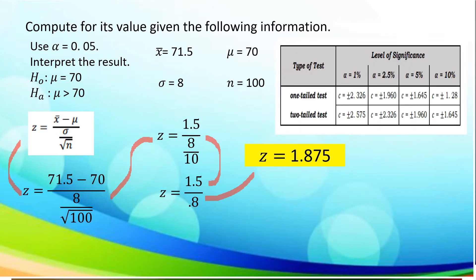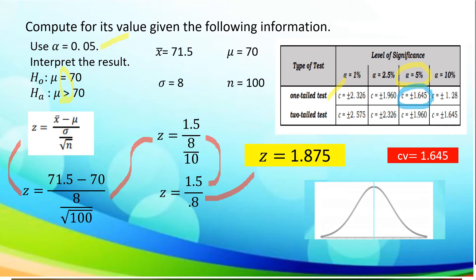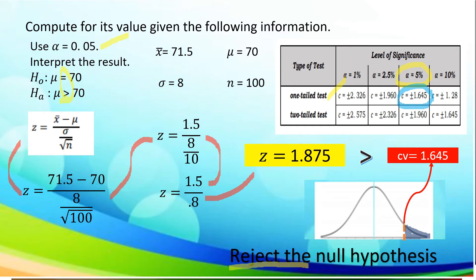Now let's use the z-table with the level of significance of 5%. Since the alternative hypothesis is mu greater than 70, this is a one-tailed test. Therefore, our critical value is positive 1.645, reflecting a right-tailed test. Using the standard normal curve to locate the critical value, since our z computed value of 1.875 is greater than the critical value of 1.645, we reject the null hypothesis.